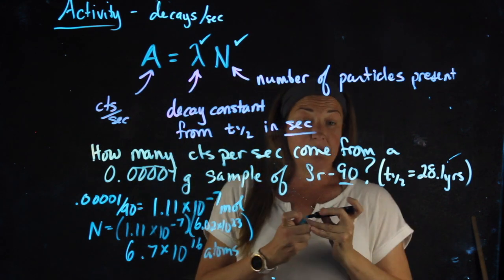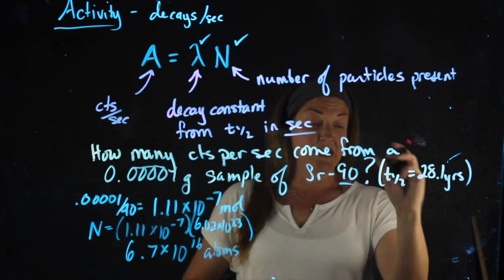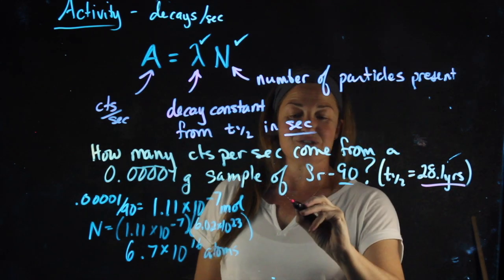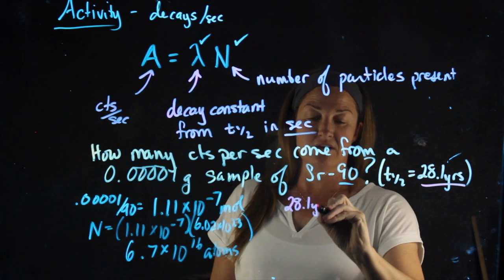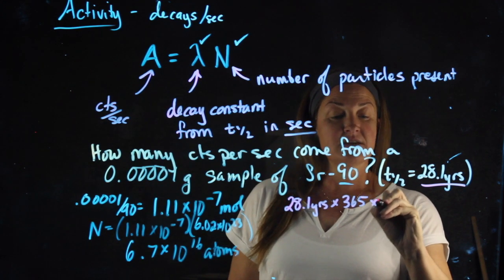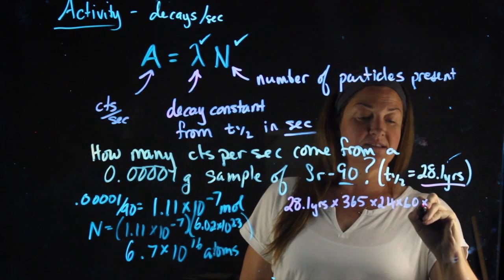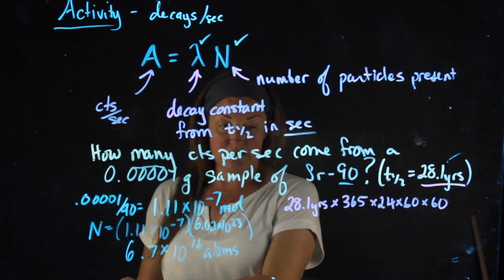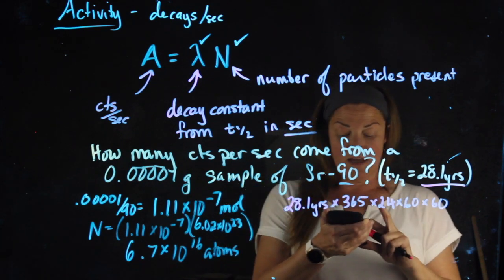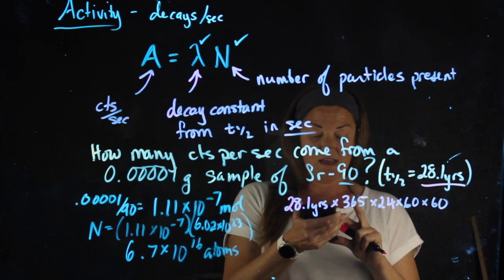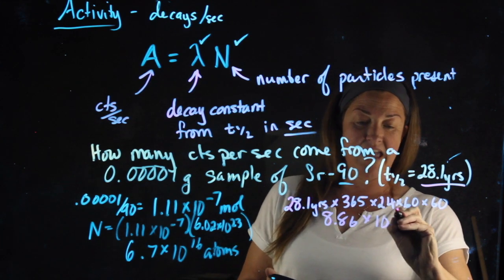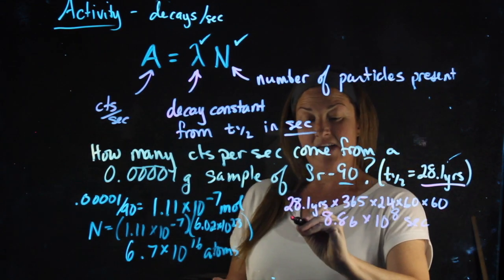I also need to get lambda, but I said we need to get it from the half-life in seconds. I have it in years. We all know how to convert years into seconds. So I'm going to take 28.1 years. I'm going to multiply by 365 days times 24 hours times 60 minutes times 60 seconds. 28.1 times 365 times 24 times 60 times 60 gives me 8.86 times 10 to the 8th seconds for the half-life.